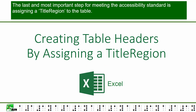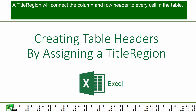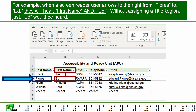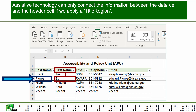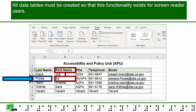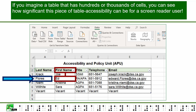The last and most important step for meeting the accessibility standard is assigning a title region to the table. A title region connects the column and row headers to every cell in the table. For example, when a screen reader user arrows to the right from 'Flores' to 'Ed,' they will hear 'First Name: Ed.' Without assigning a title region, just 'Ed' would be heard. If you imagine a table with hundreds or thousands of cells, you can see how significant this piece of table accessibility can be.